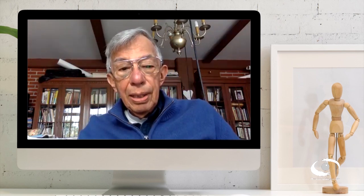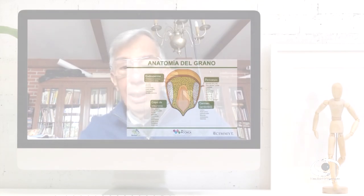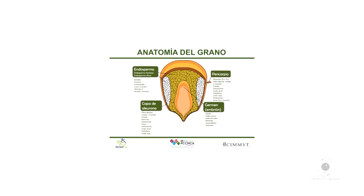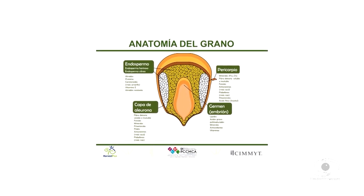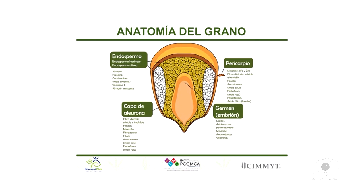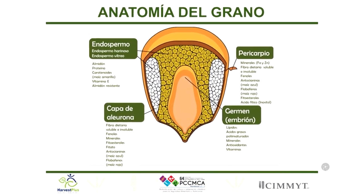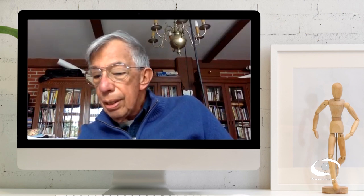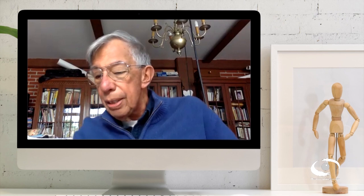Vamos a entender qué está ocurriendo con la masa nixtamalizada. Con ella tenemos que tomar en cuenta cómo es el grano de maíz. La semilla del maíz en su interior contiene varias capas y estructuras, pero entre ellas lo que abunda es el almidón. Este almidón junto con proteína y otros productos está dentro del grano, y al momento de molerlo se une y se forma una masa cuya estructura cambia notablemente en el caso del maíz nixtamalizado.